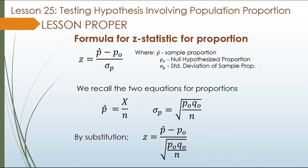The formula for the z-statistic for proportion. Also, if we use this formula for population proportion, we must recall the two equations for proportions: p-hat equals x over n, and the standard deviation of the sample proportion equals the square root of the ratio of the product of p-sub-o, q-sub-o, and n — our population. When we combine these two and substitute into the z value formula, we get z equals p-hat minus p-sub-o over the square root of p-sub-o times q-sub-o over n.